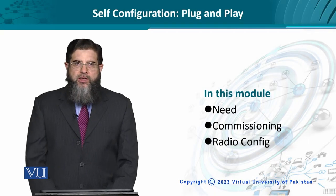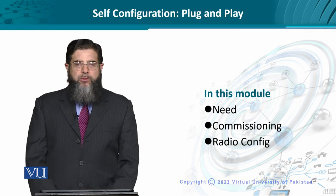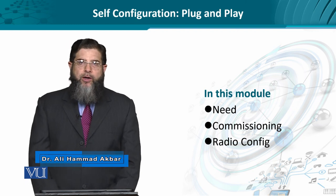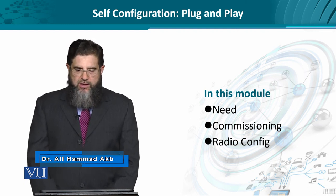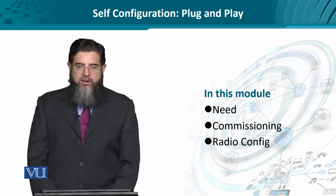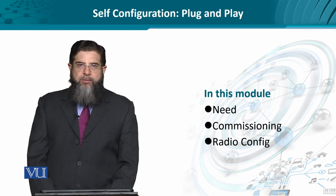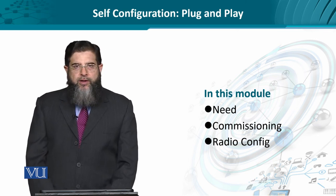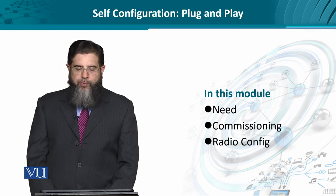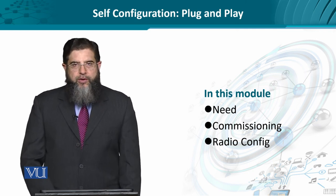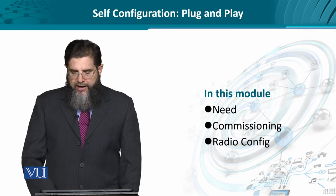One of the first requirements for self-organizing networks is self-configuration. Configuration lies at the heart of optimization for faults — that is, reducing faults, improving performance, having better account and audit of the network, and keeping the system secure. Self-configuration is at the essence of self-organization. We'll see how the requirement for self-configuration was understood, and look at an interesting scenario of commissioning and radio configuration.